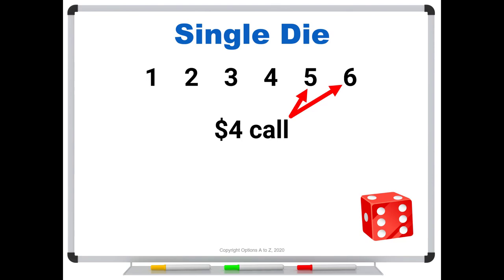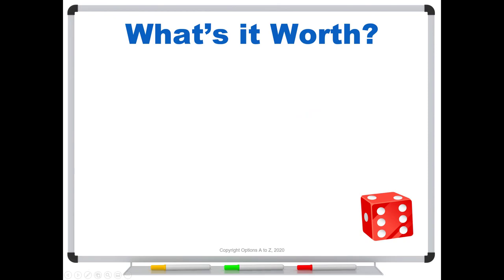So the only time that our call option can pay off is if the die turns up a five or a six. What do we win? Well, if the face upside is a five and we've got the four dollar call, it pays off a buck. If the face upside is six, it pays off two bucks. So the possible payoffs that we could have are these. We'll earn zero if the die comes up one through four. We'll earn a dollar if it turns up five and we'll earn two dollars if it turns up six. So now we've kind of mapped out the potential rewards. And once we have this, along with the probabilities, we can figure out the fair value.